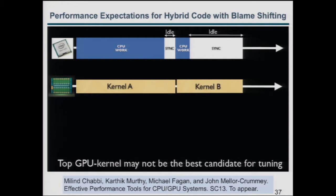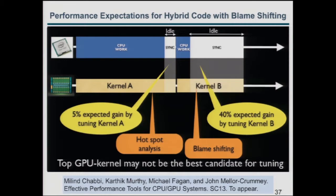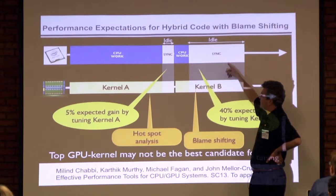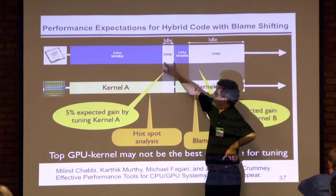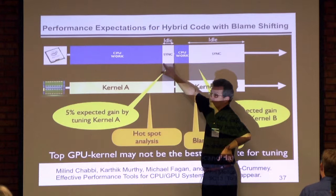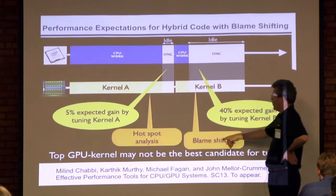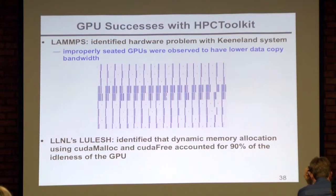We do the same thing for GPUs. The longest kernel might be overlapped with a lot of CPU work, while a shorter kernel might leave the CPU idle. If you shorten that shorter kernel, the only improvement you get is the synchronization time — it won't help much. Whereas shortening the longer kernel can reduce the entire execution time. Our tool tells you which kernel you should be tuning.